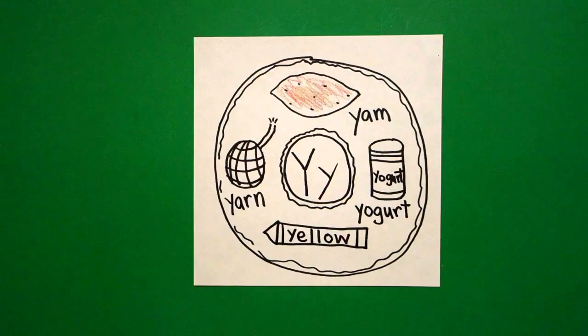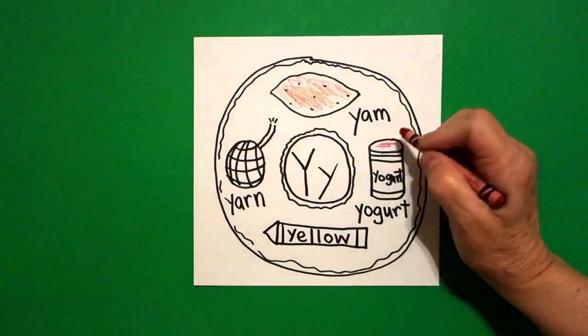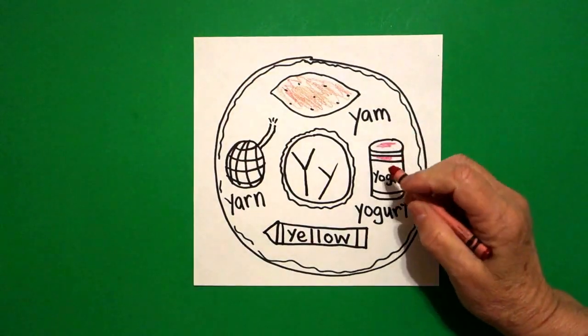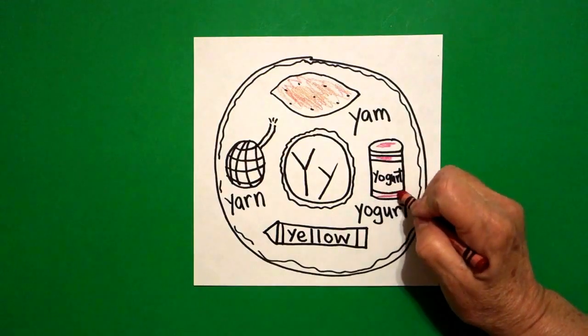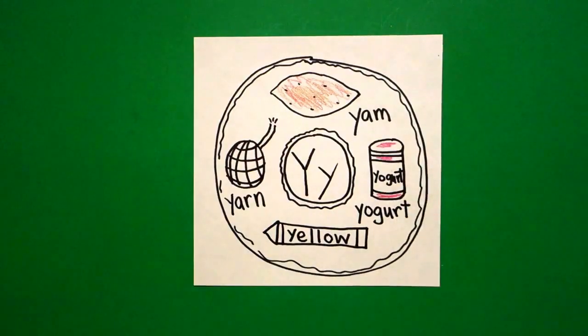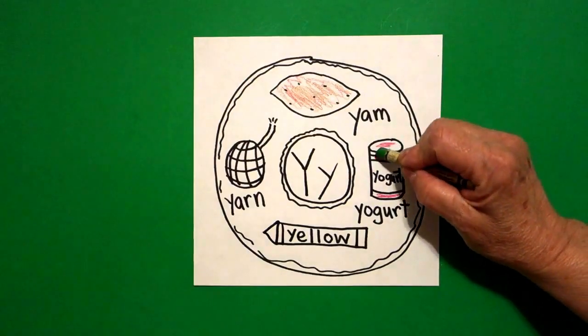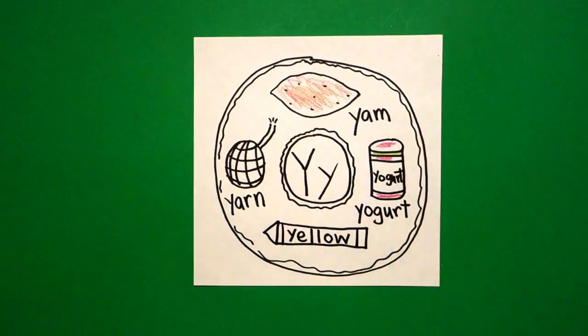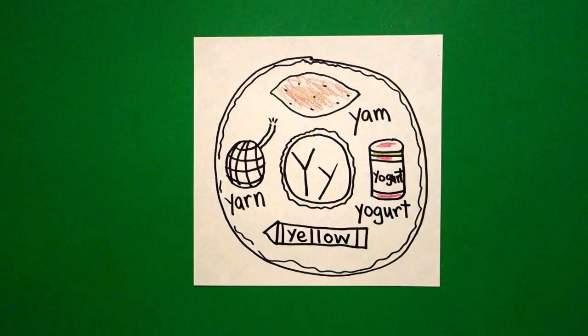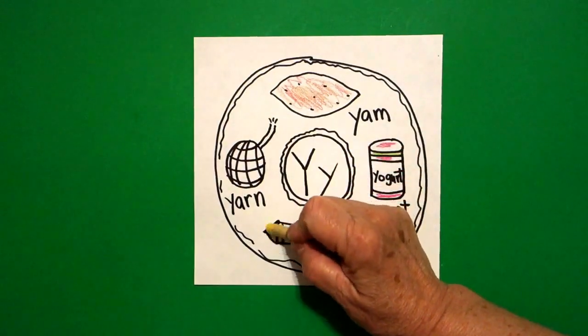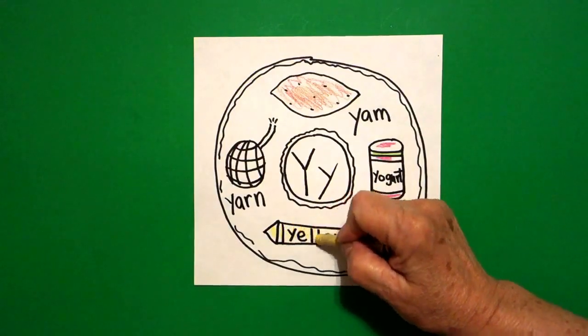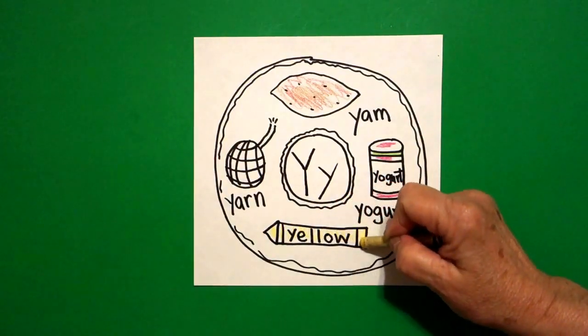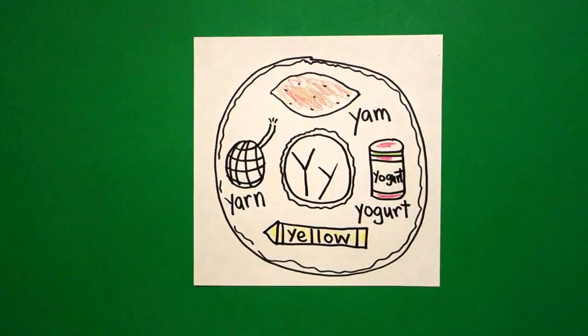Then I come to my yogurt. Yogurt. And I'm going to color my stripes red and my little stripe in here green just to decorate the package for yogurt. And then this is a yellow crayon. So I'm going to color all of this yellow. Yellow.